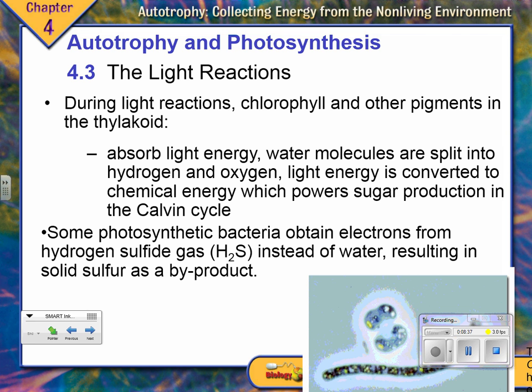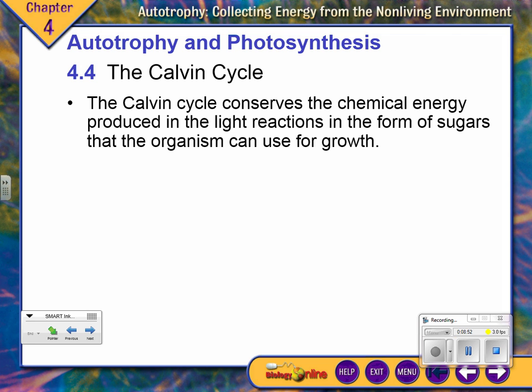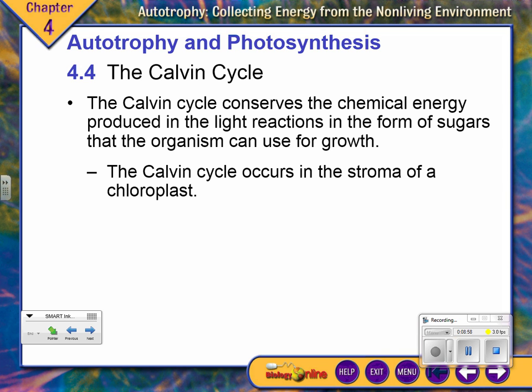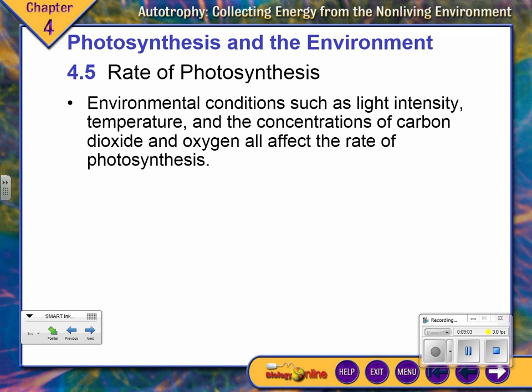We'll talk more about chloroplasts — the organelle in plant cells where photosynthesis occurs. One group will teach you about the light reactions, and somebody else will cover the Calvin cycle. Remember that photosynthesis has two different processes you need to be familiar with.